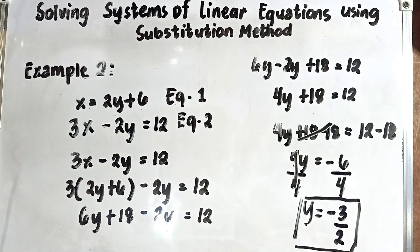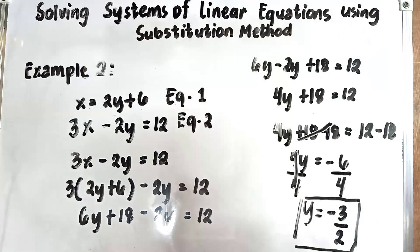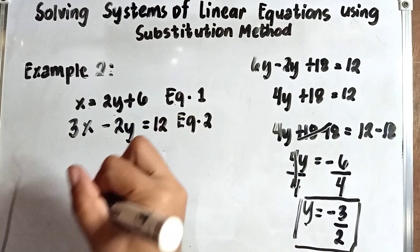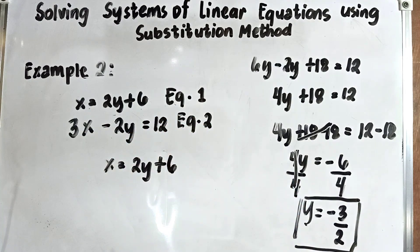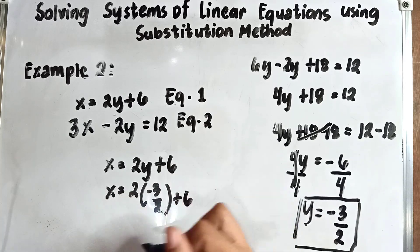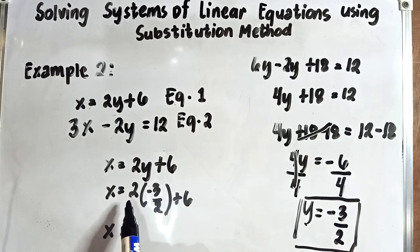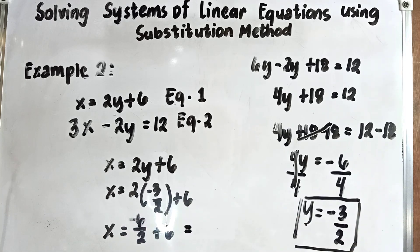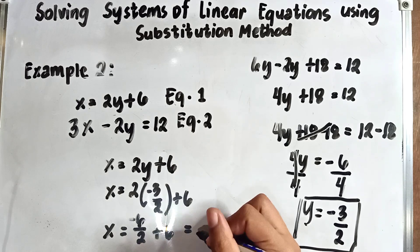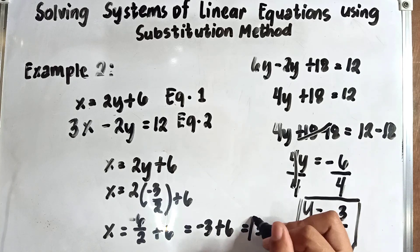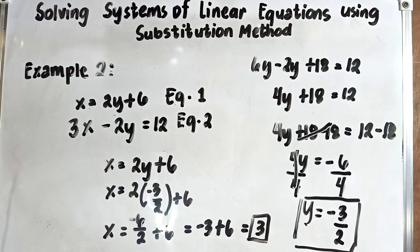Now we find the value of x by substituting y equals negative 3 over 2 into equation 1: x equals 2y plus 6. So x equals 2 times negative 3 over 2 plus 6. That gives x equals negative 6 over 2 plus 6, which is negative 3 plus 6. Therefore x equals positive 3. Our final answers are x equals 3 and y equals negative 3 over 2.